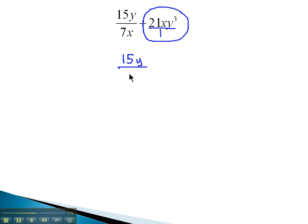The first fraction always stays the same, 15y over 7x. There's no exponents, so we don't have to expand. The reciprocal, now the 1 in the numerator over 21xy cubed. The y is cubed, so we show there are 3 y's multiplied together.